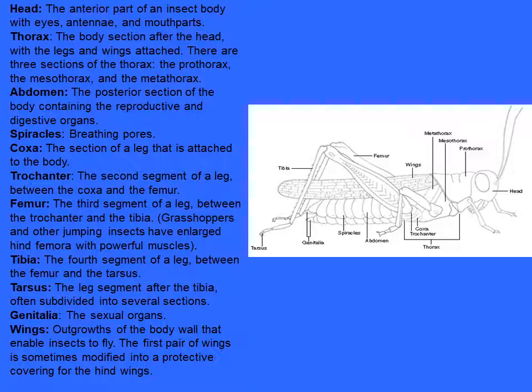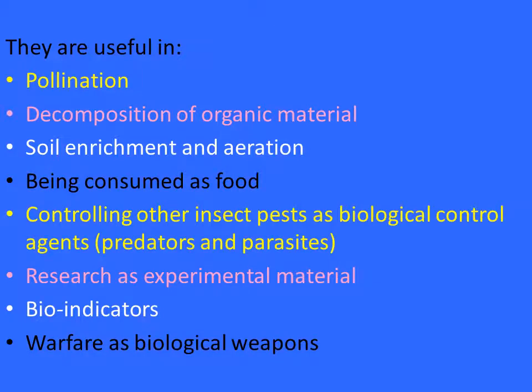The genitalia are sexual organs present on the apical part of the abdomen, on the last abdominal segment. The wings are outgrowths of the body wall that enable insects to fly. The first pair of wings is sometimes modified into a protective covering for the hind wing, as in beetles (Coleoptera). This is a typical morphological structure of an insect.